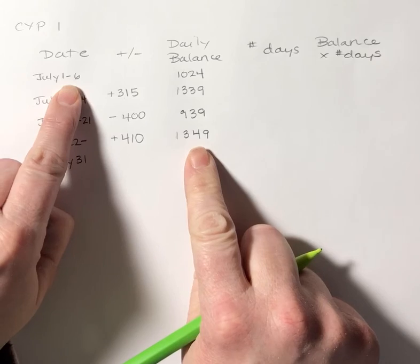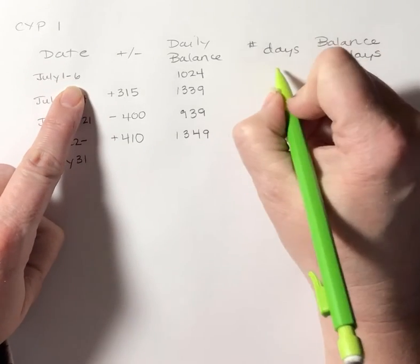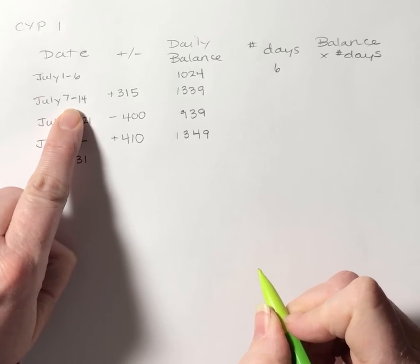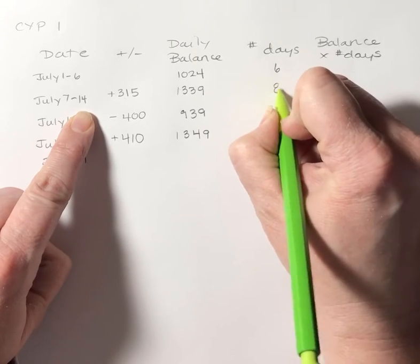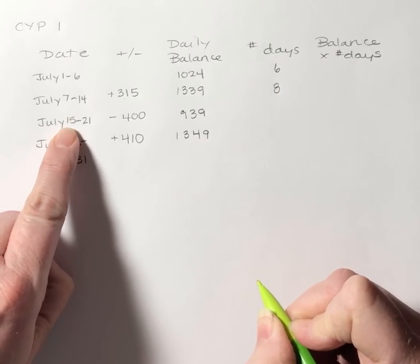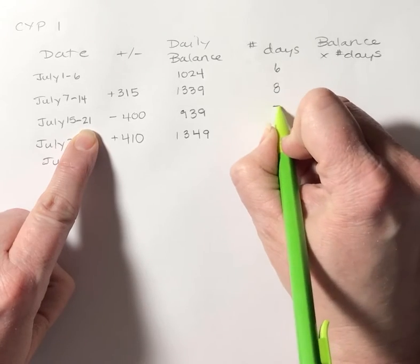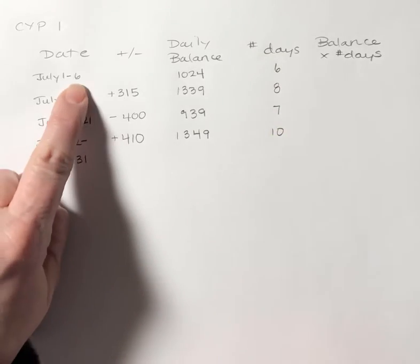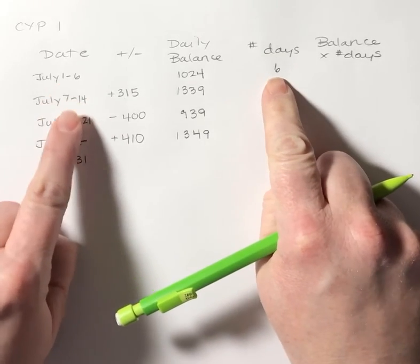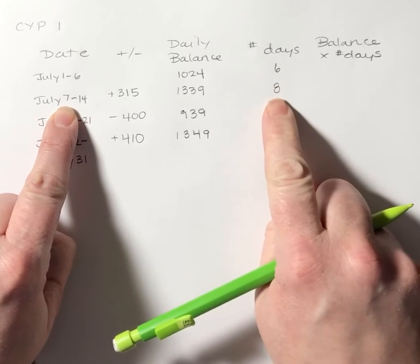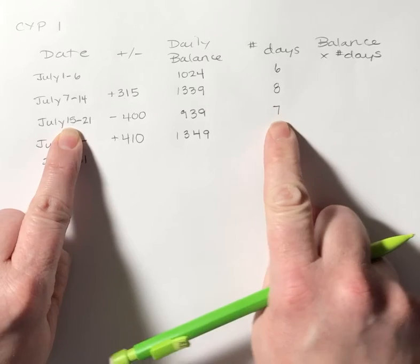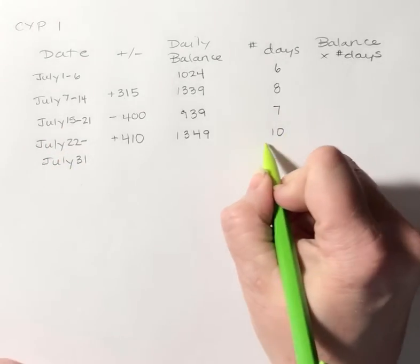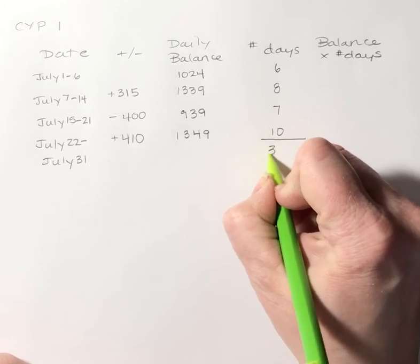Now for the number of days: July 1st through the 6th is 6 days. July 7th through 14th is 8 days. July 15th through the 21st is 7 days. And July 22nd through the 31st is 10 days. You can subtract and add one, or you can count. 6 minus 1 is 5, plus 1 is 6; 14 minus 7 is 7, plus 1 is 8; 21 minus 15 is 6, plus 1 is 7; 31 minus 22 is 9, plus 1 is 10. So I have a total of 31 days.